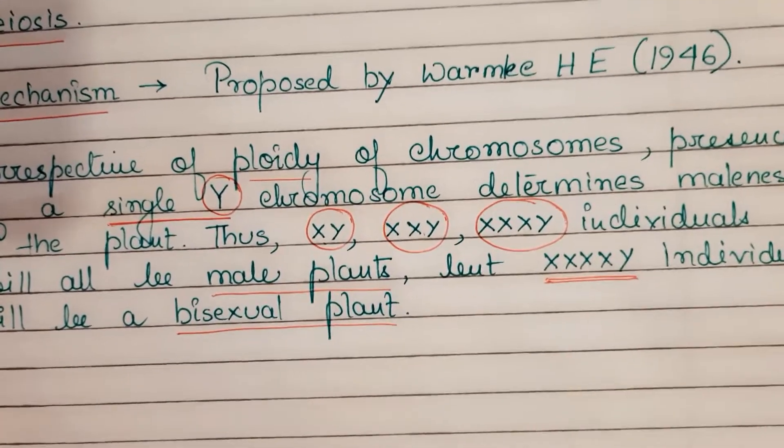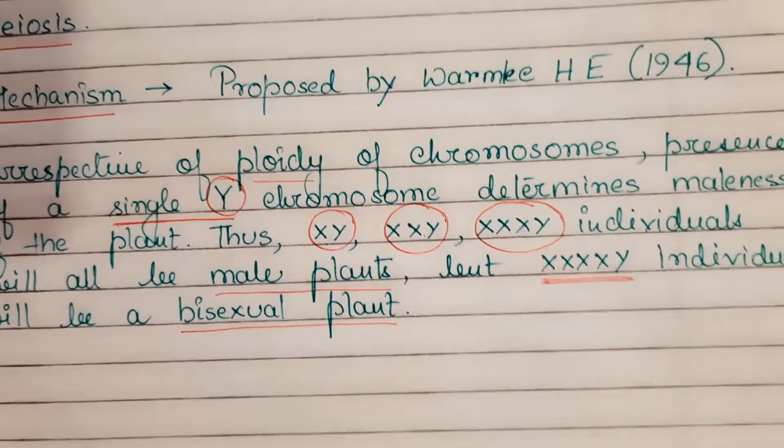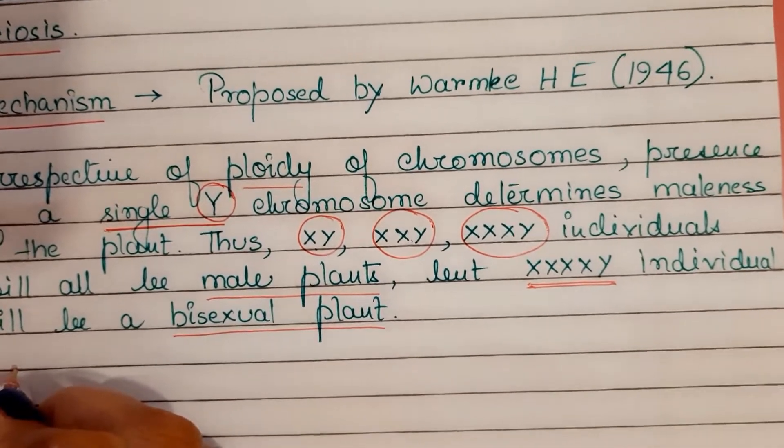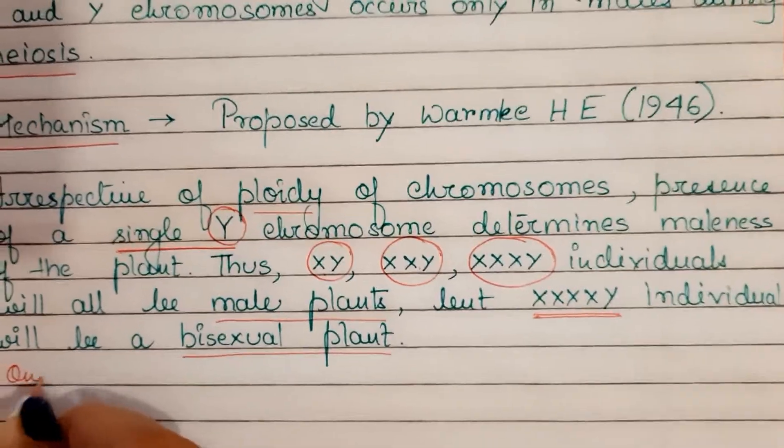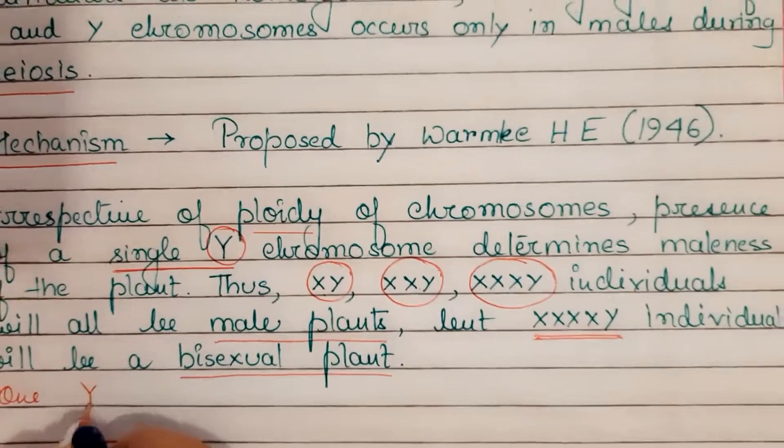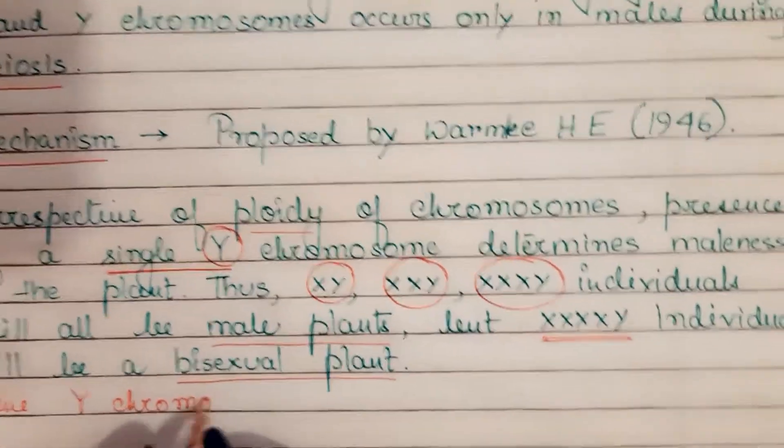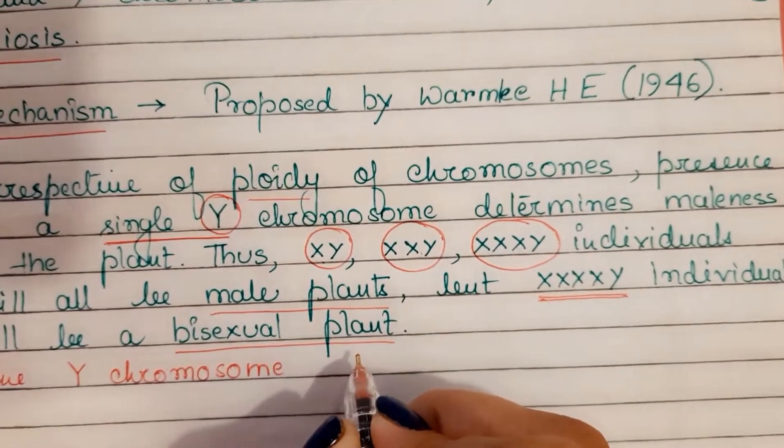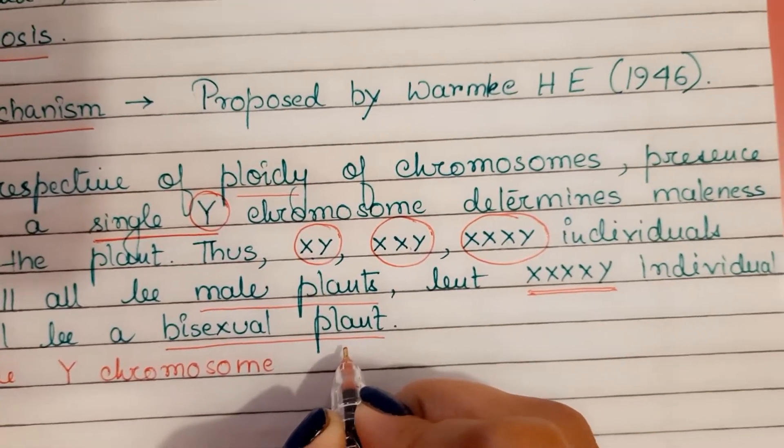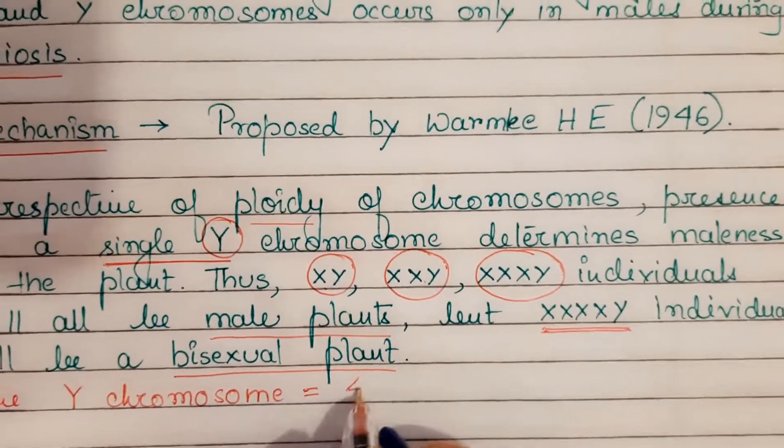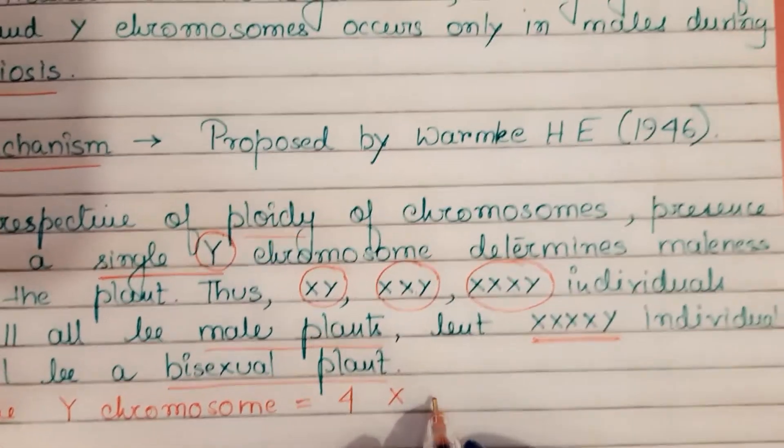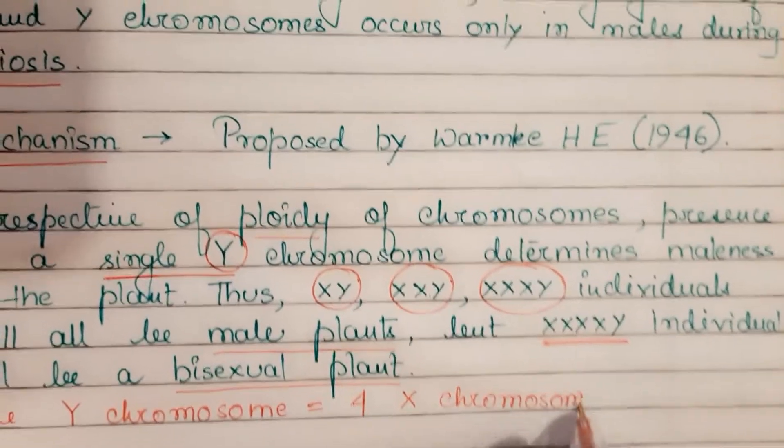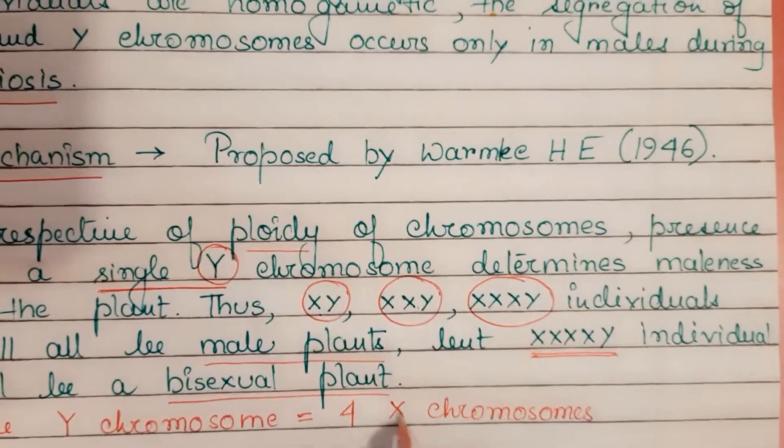Could you find out why is it so? Well, let me tell you. Remember always, one Y chromosome is equal to four X chromosomes. Please remember this relation.